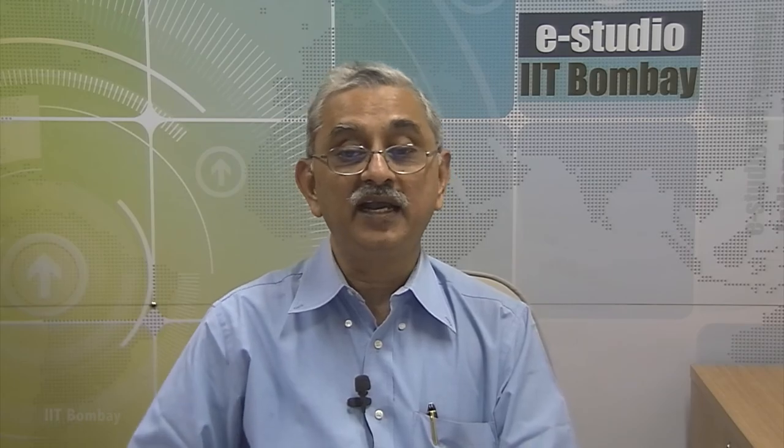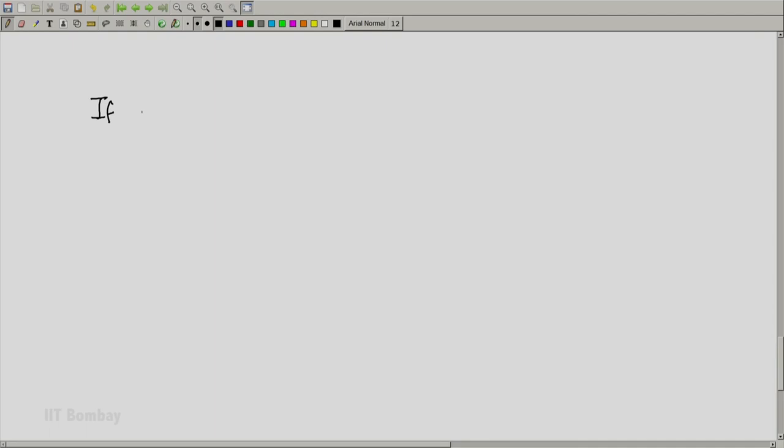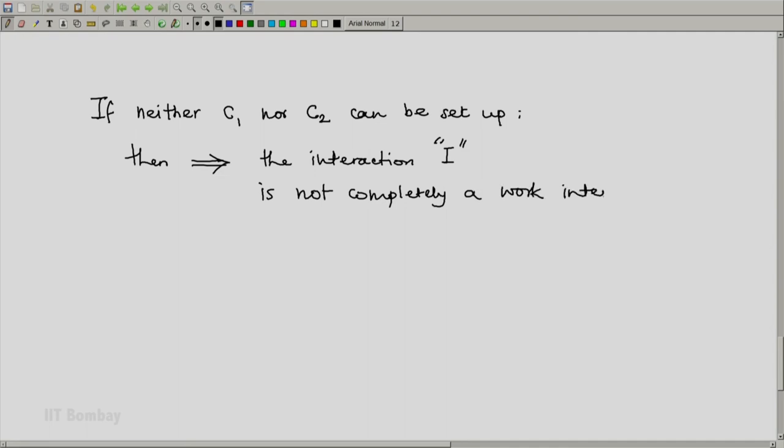Conclusions are similar to the conclusions of step 1, but the other way: A and B get interchanged. It is also possible that we cannot set up C1 nor can we set up C2 as required. Then the conclusion is the interaction I is not completely a work interaction. It may be work in part, but definitely there is a component which is the non-work type of interaction. Later on we will define this non-work type of interaction as the heat interaction.